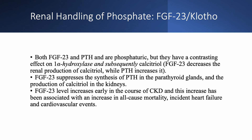FGF23 and PTH are both phosphaturic, but they have opposite effects on calcitriol — meaning opposite effects on 1-alpha-hydroxylase, the enzyme that converts 25-hydroxyvitamin D to 1,25-D (calcitriol). FGF23 suppresses calcitriol production while PTH increases it. FGF23 suppresses both PTH synthesis in the parathyroid gland and calcitriol production — FGF23 is a downer; it doesn't like anyone.